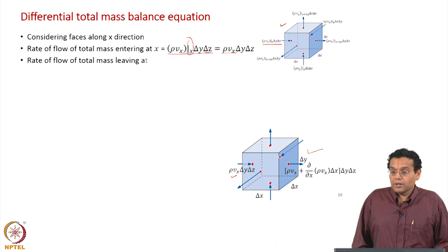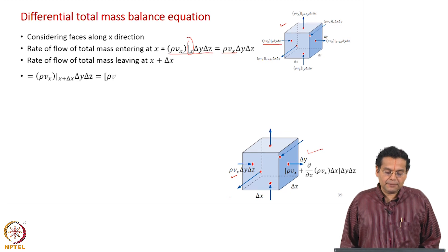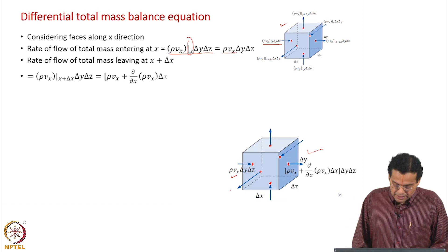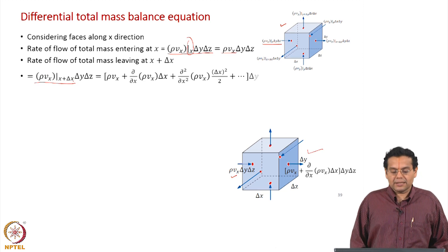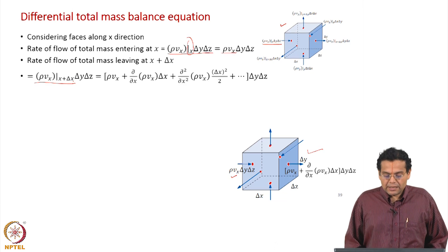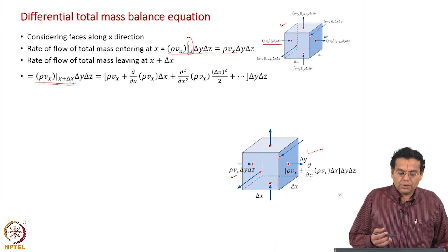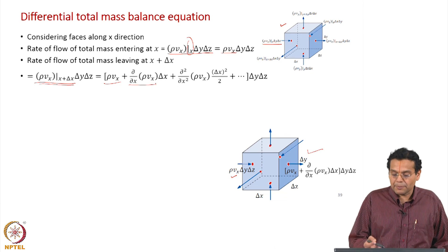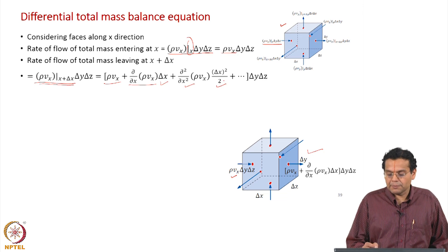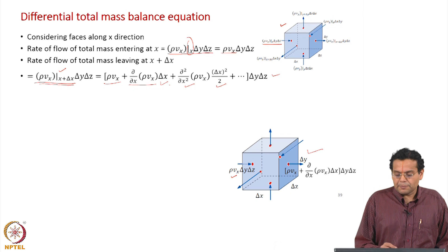The rate of flow of total mass leaving at x plus Δx — this is where a little more difference comes in terms of representation. The way we represented it is ρv_x evaluated at x+Δx, multiplied by ΔyΔz. In fluid mechanics books, ρv_x at x+Δx is represented using a Taylor series expansion about ρv_x at position x. So we expand ρv_x at x+Δx as: ρv_x (at x) plus the first partial derivative multiplied by Δx, plus the second derivative multiplied by Δx²/2, and so on, multiplied by ΔyΔz.